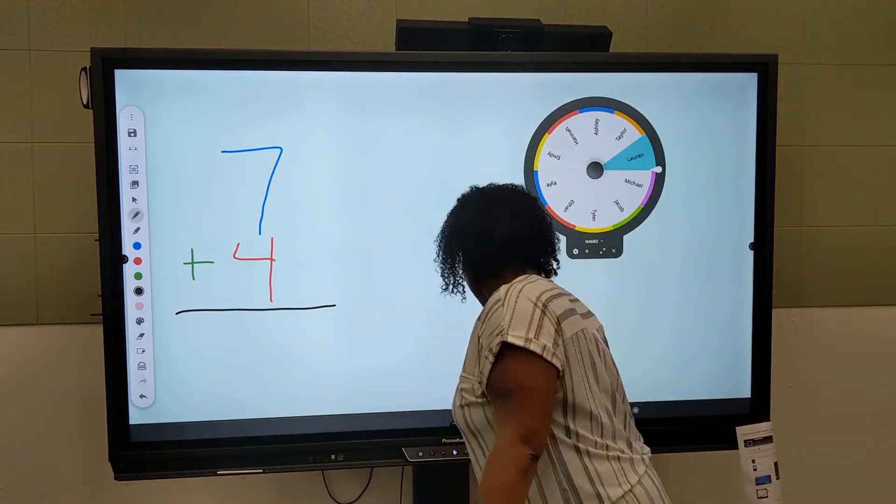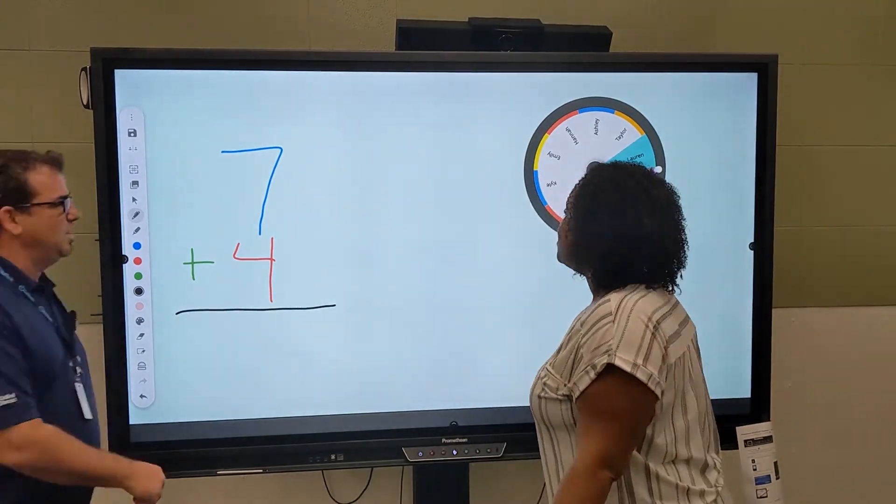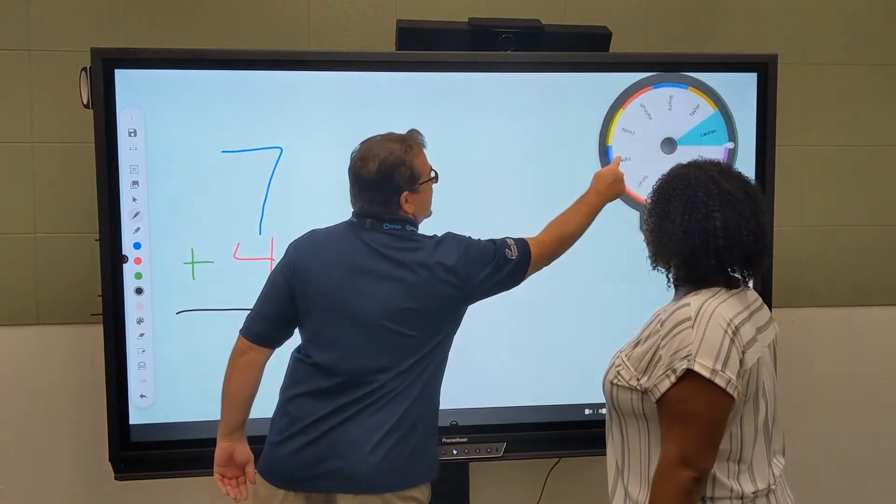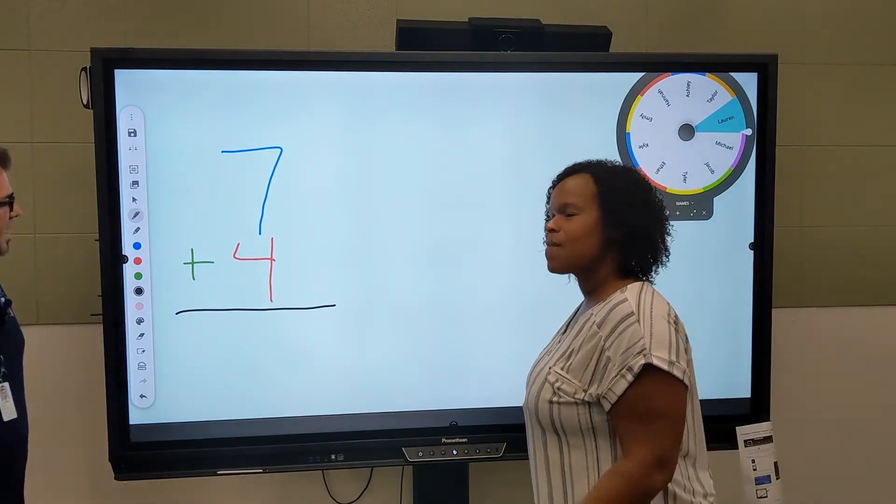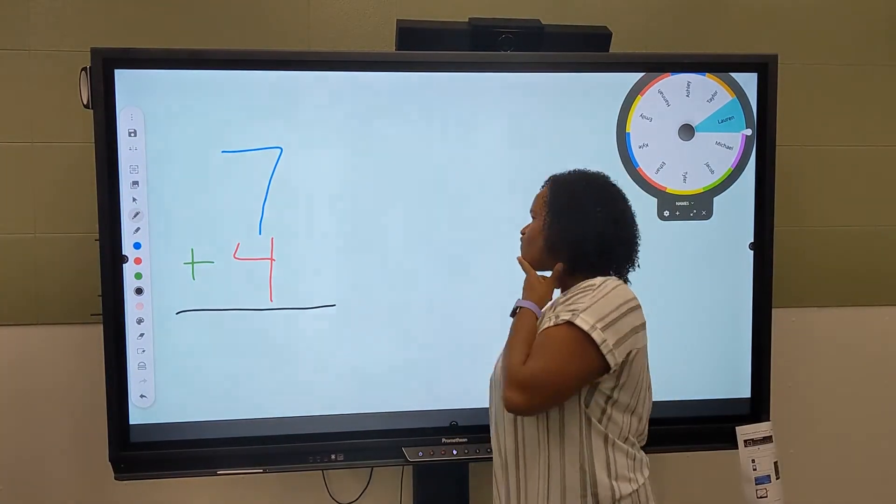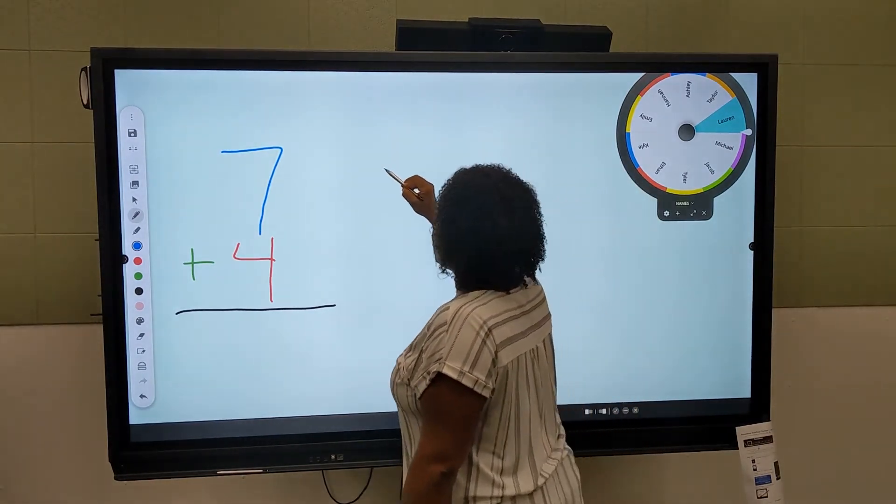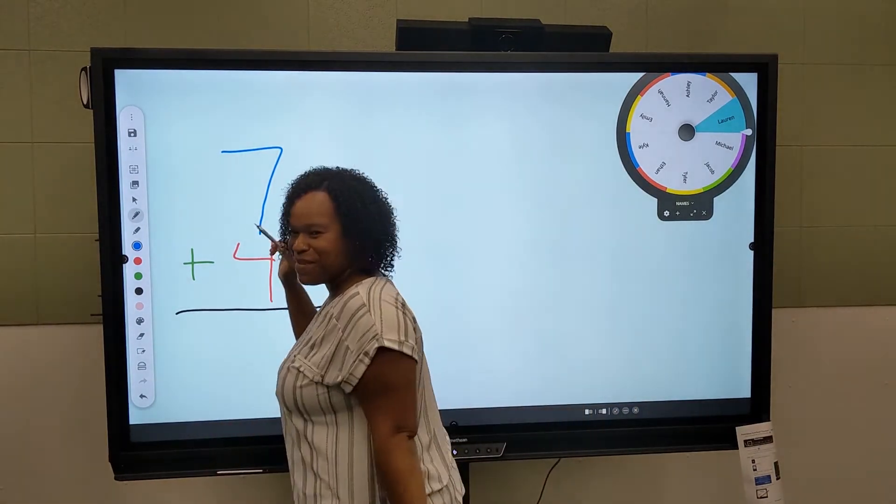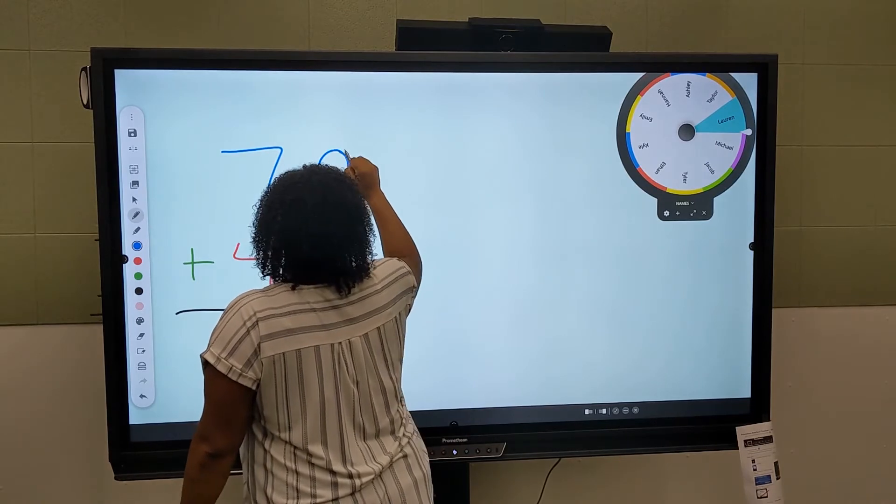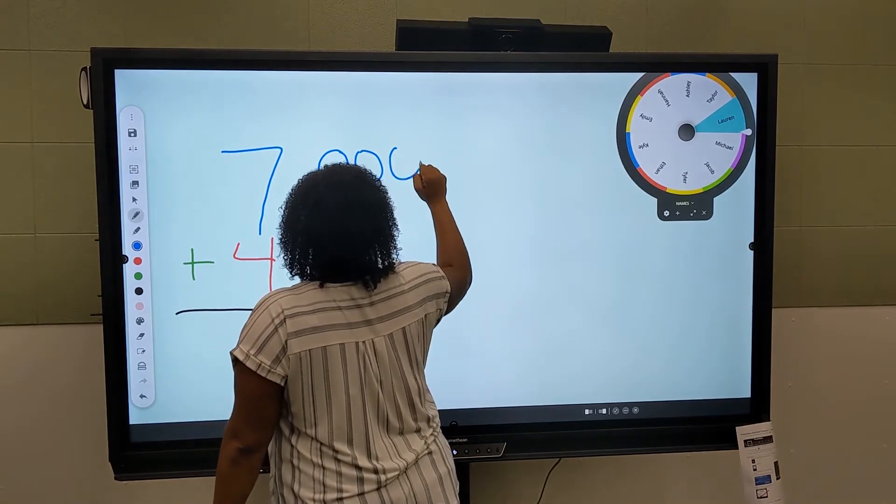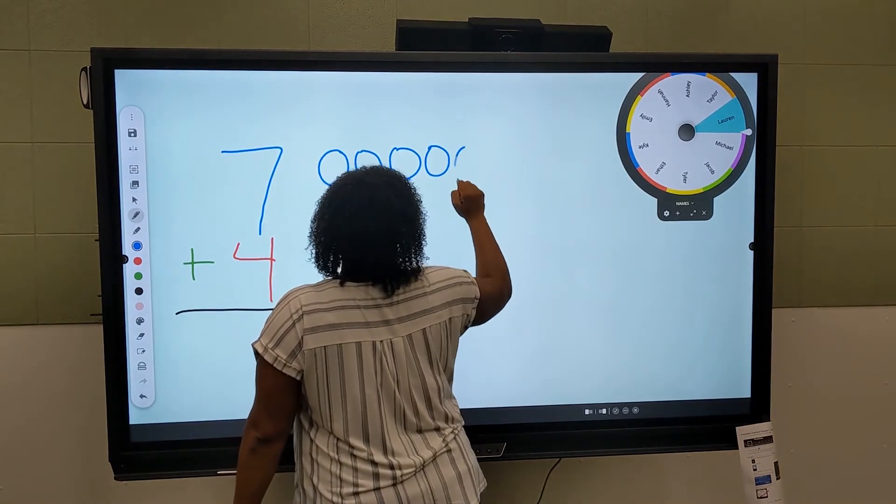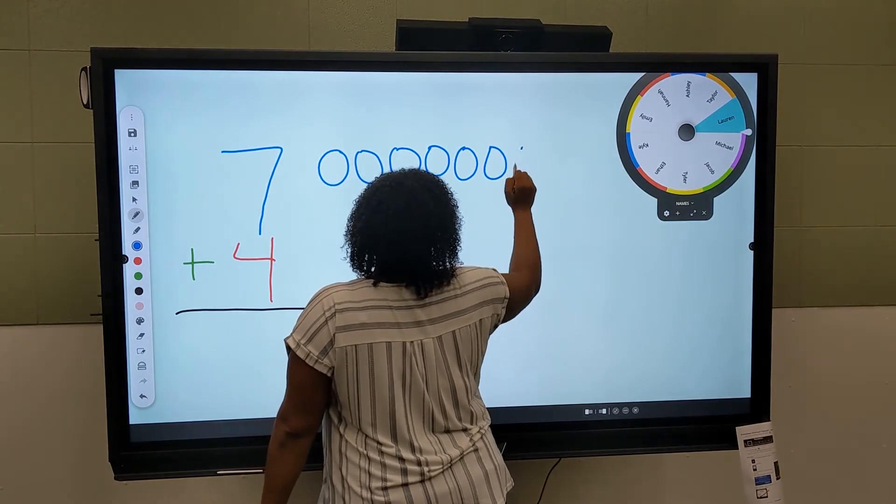All right Lauren, what we want you to do is we want you to show us how you drew your model to solve the problem. First I drew seven counters. Count with me: one, two, three, four, five, six, seven.